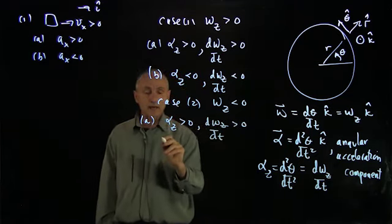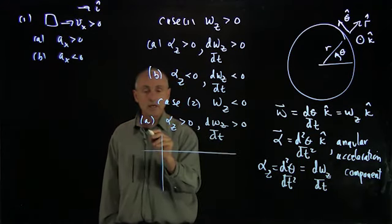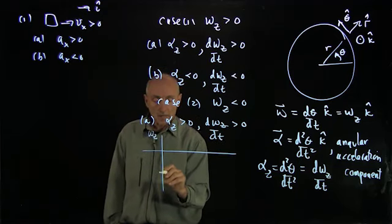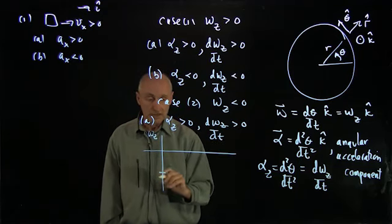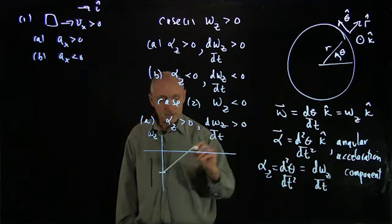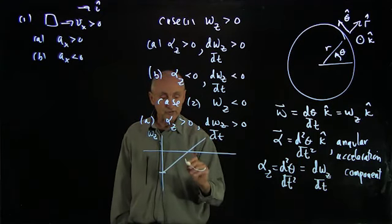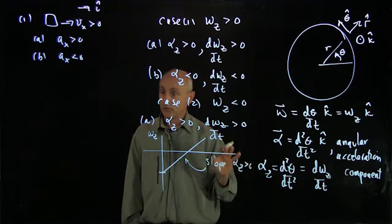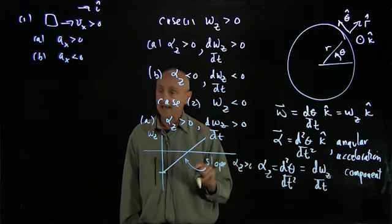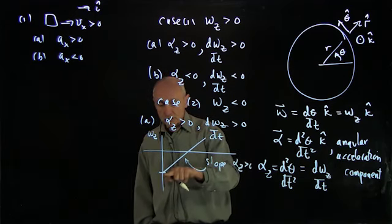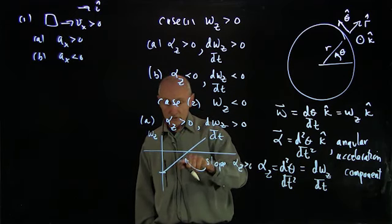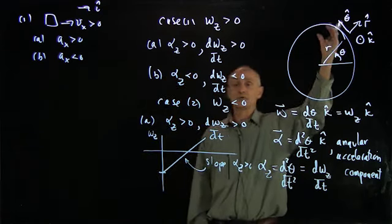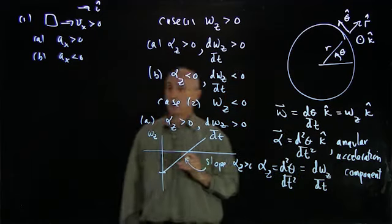So something like that could correspond to if we plotted ω_z and we had an object that starts off with a negative ω_z and increases. Notice that the slope here, which is α_z positive, corresponds to a positive angular acceleration component. And the object slows down as omega gets closer to 0, stops, and now has a positive ω_z corresponding to motion in counterclockwise direction.